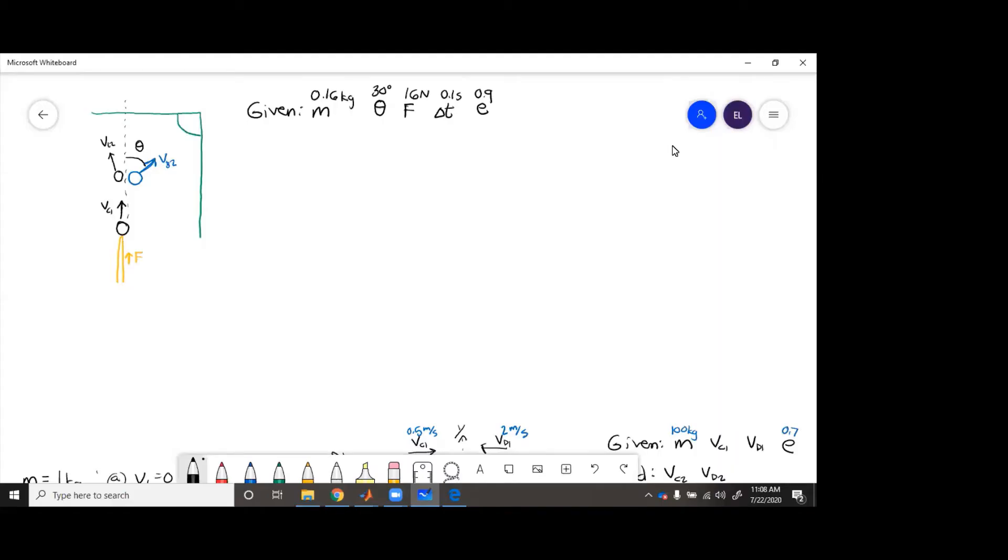In this billiards problem, we want to hit the cue ball with a force of F. The cue ball will then hit the blue ball and send the blue ball into the corner pocket at an angle theta.